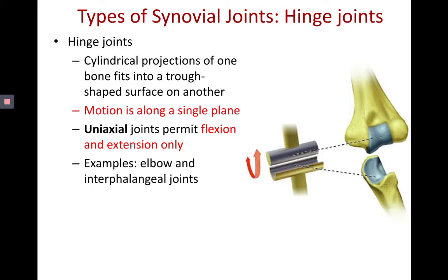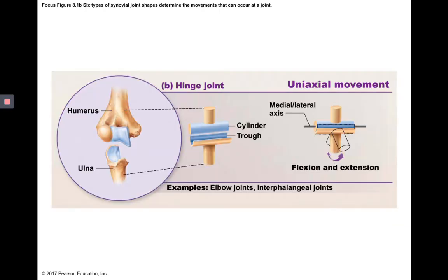Hinge joints have a trough-shaped surface that fits a cylindrical or rod-shaped structure. A good example is the elbow joint between the ulna and humerus, and another is the interphalangeal joints — the joints between finger bones. This type of joint only allows movement along one plane, so it's uniaxial, with movement being flexion and extension only.